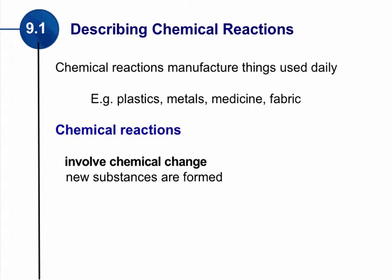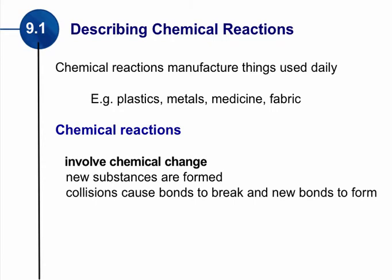These new substances that are formed are a result of collisions. Elements combine together through these collisions, which break bonds that exist and form new bonds. It is the colliding atoms or colliding molecules that actually break apart and form new bonds. We're going to spend a lot of time looking at collisions and forming new bonds, but before we get into that, we want to be able to describe the reactions.